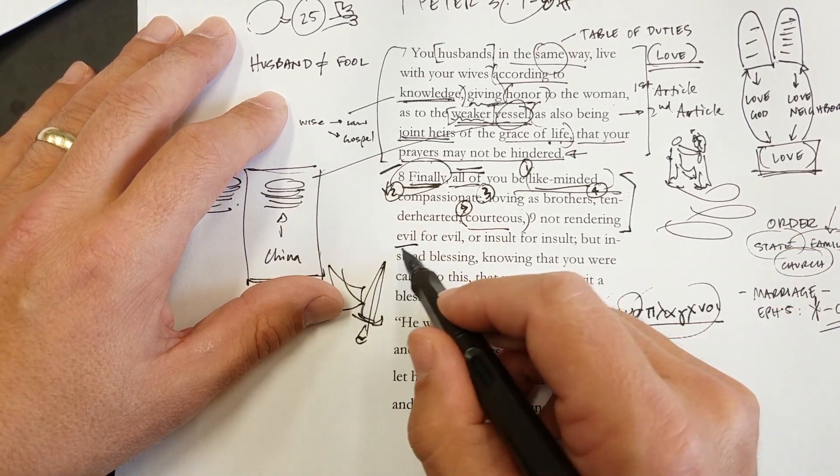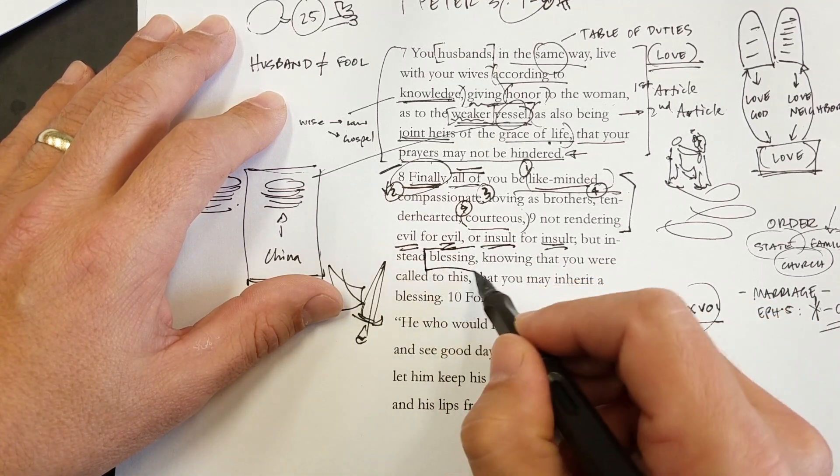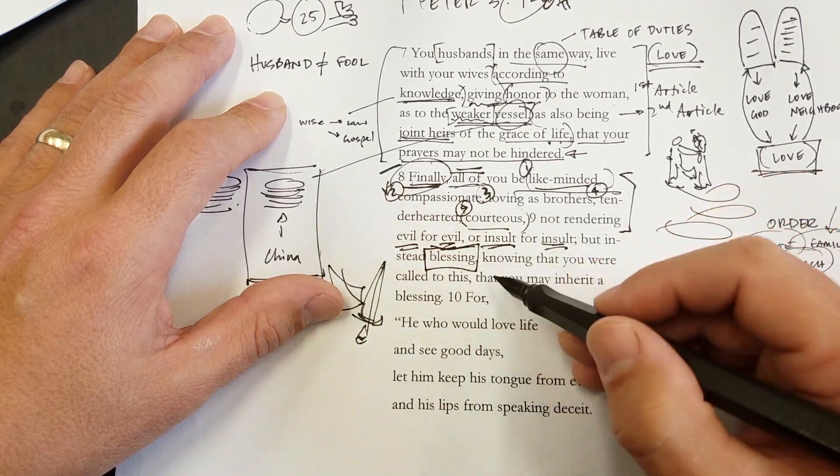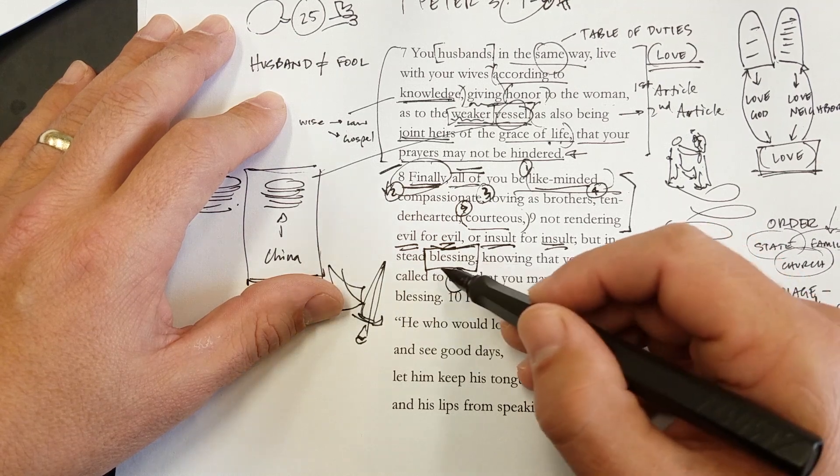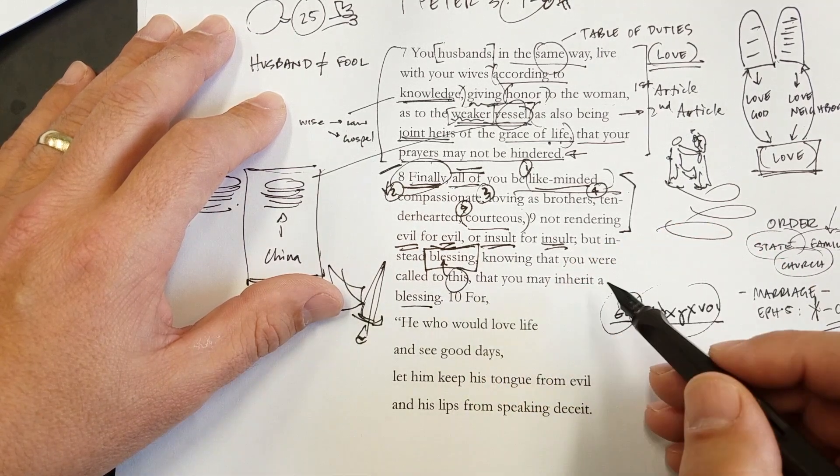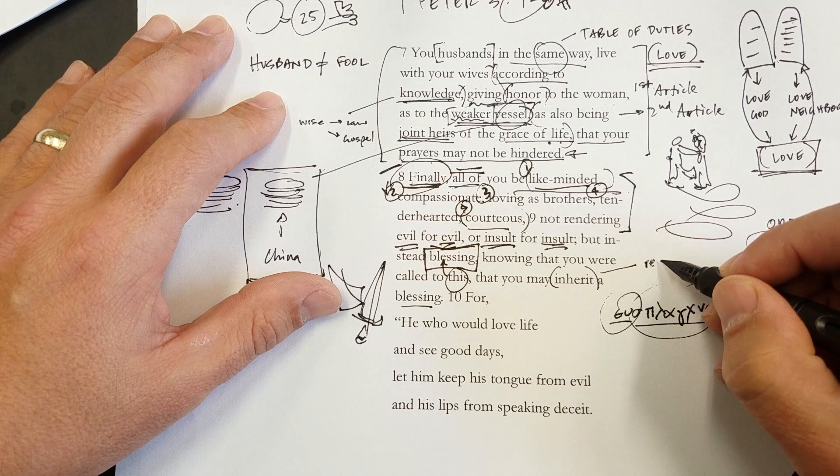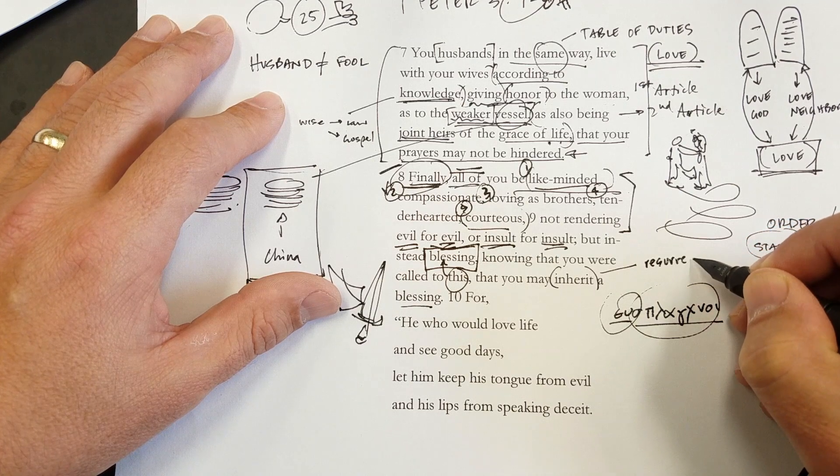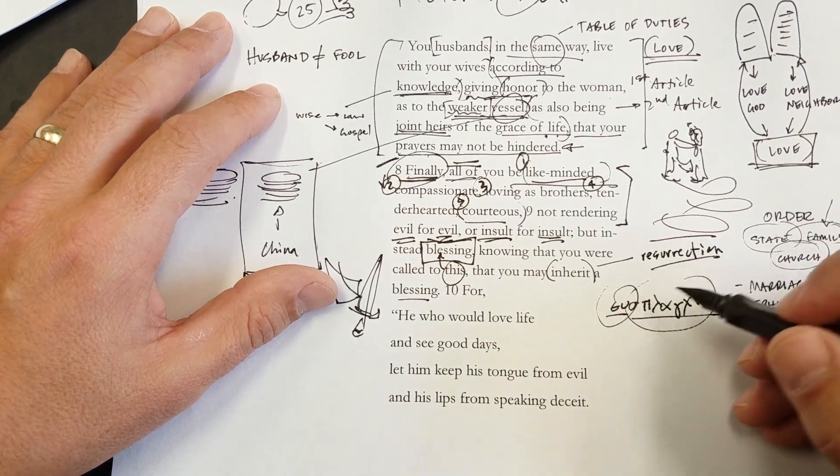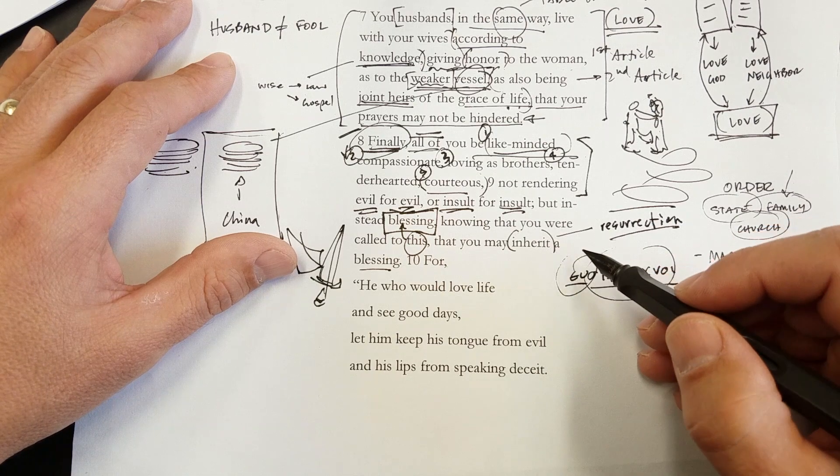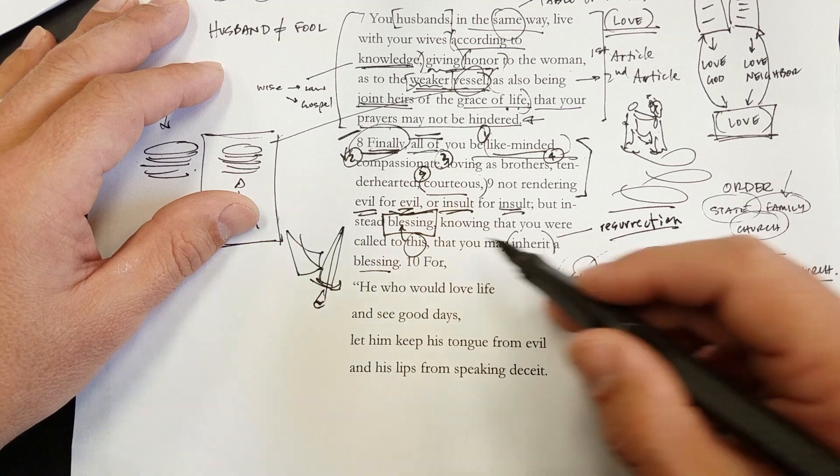And then, look, not rendering evil for evil, or insult for insult, but instead, blessing. Now, this is so key. In fact, Peter's going to emphasize it. Knowing that you were called to this. To what? To blessing. That you may inherit a blessing. So, we know that we have an inheritance which waits for us in heaven. Inheritance talk is always talk of the resurrection. This is our inheritance. The new heaven and the new earth, in which righteousness dwells. So, we have this coming for us. We are going to live forever in a blessed world. So, what do we do? We bless one another.